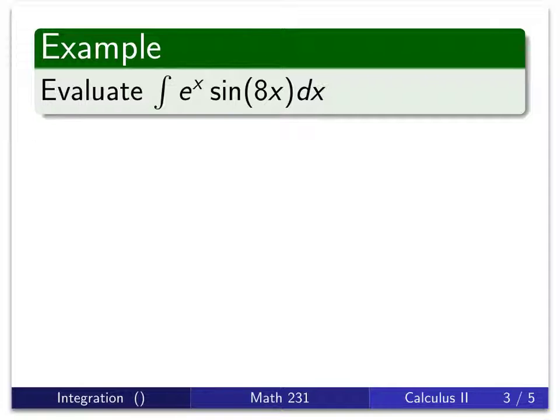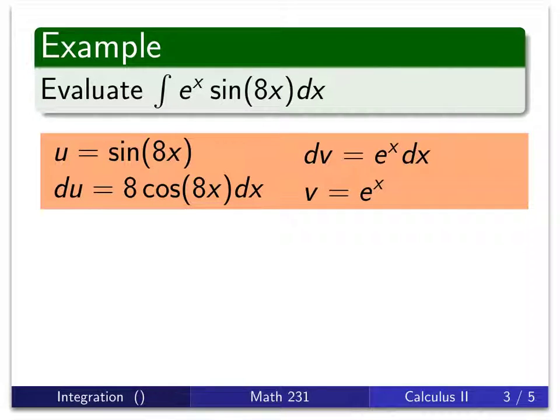So what we're going to do in this case is it really doesn't matter which one we choose to be u and which one we choose to be dv, but it's easier to differentiate things than it is to integrate. And the more complicated thing here to differentiate would be that guy. So I'm going to choose u to be sin(8x), dv will be e^x dx. When I take the derivative, I have to use the chain rule. du will be 8 cos(8x) dx. dv is everything else, e^x dx. Its antiderivative is e^x.